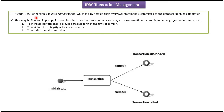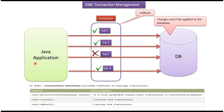By default, JDBC connection is in auto-commit mode, meaning each and every SQL statement is committed to the database upon its completion. If you want to manage your own transaction, you have to make auto-commit as false. There is a method in the connection interface — setAutoCommit — to which you pass a boolean value. By default the boolean value is true; if you want to manage your transaction you have to make it false.